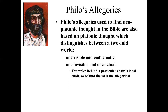Philo's allegories are used to find Neoplatonic thought in the Bible. That Neoplatonic thought had a twofold world — one visible and symbolic or emblematic, the other invisible but actual. Behind every particular chair, there would be an ideal chair — that's Neoplatonic thinking. Behind the literal would be the allegorical, and the goal of interpreting was to try to tease out that allegorical meaning hidden underneath the text.